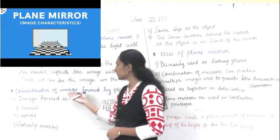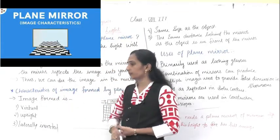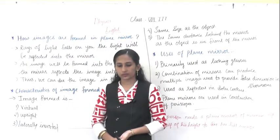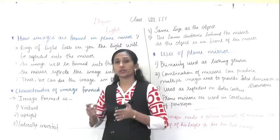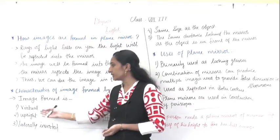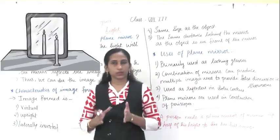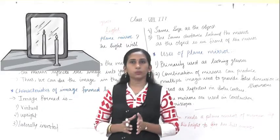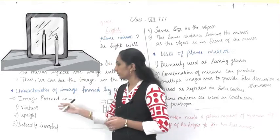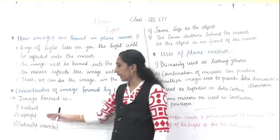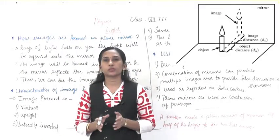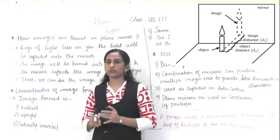Now we will go to the characteristics of the image formed by the plane mirror. The first characteristic is that the image is virtual. The image which is formed in the plane mirror is a virtual image, and it is also upright — meaning an erect image is formed in the plane mirror.